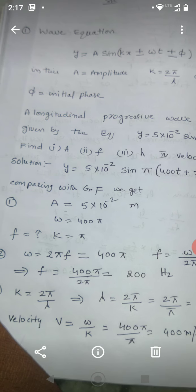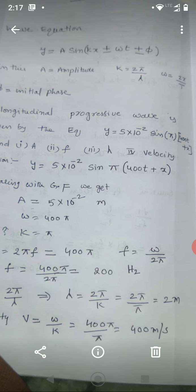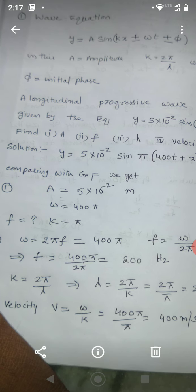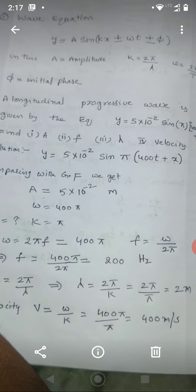He asked you to find A, A means amplitude. F means frequency. Lambda means wavelength and wave velocity. What is the procedure to follow? First, you compare the given equation with general equation.